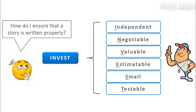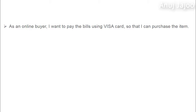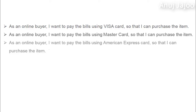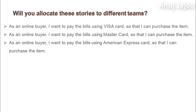Consider these three requirements: As an online buyer, I want to pay the bills online using Visa card so that I can purchase the item. As an online buyer, I want to pay the bills online using MasterCard so that I can purchase the item. As an online buyer, I want to pay the bills online using American Express card so that I can purchase the item. Assume that there are multiple Scrum teams working on this project — will you allocate these stories to different teams, and why not?